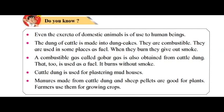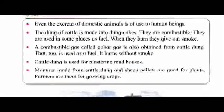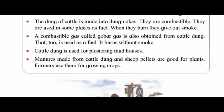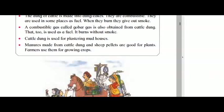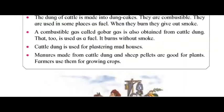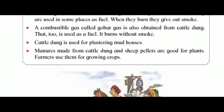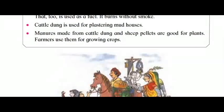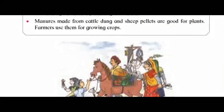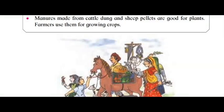Even the excreta of domestic animals is of use to human beings. The dung of cattle is made into dung cakes — they are combustible and used in some places as fuel. When they burn they give out smoke. A combustible gas called gobar gas is also obtained from cattle dung, and it is used as fuel — it burns without smoke. Cattle dung is also used for plastering mud houses.